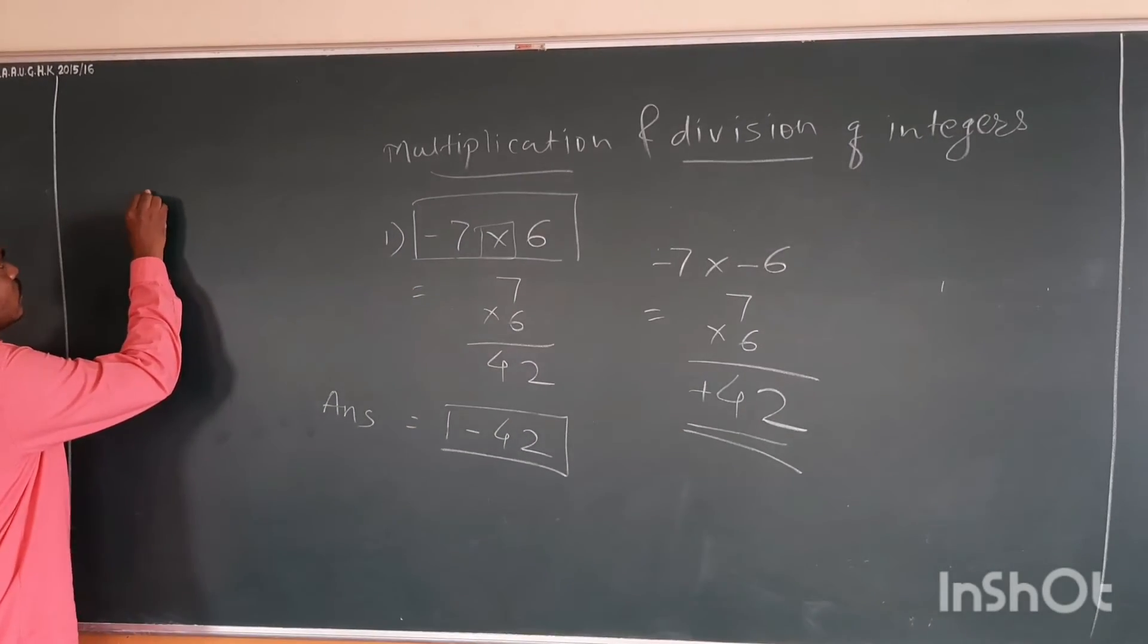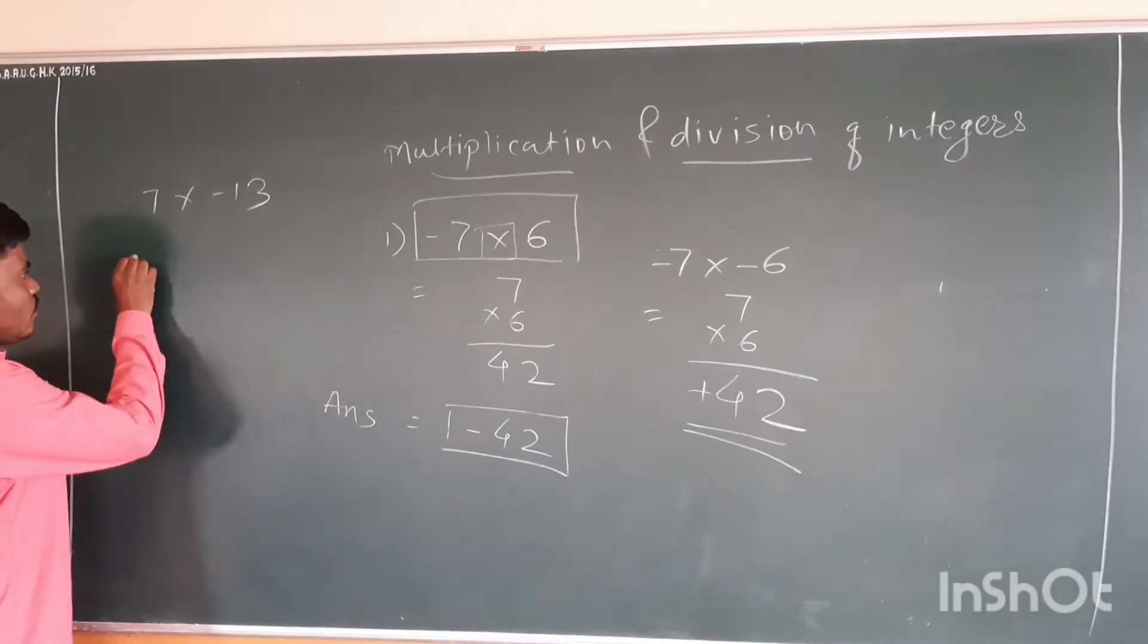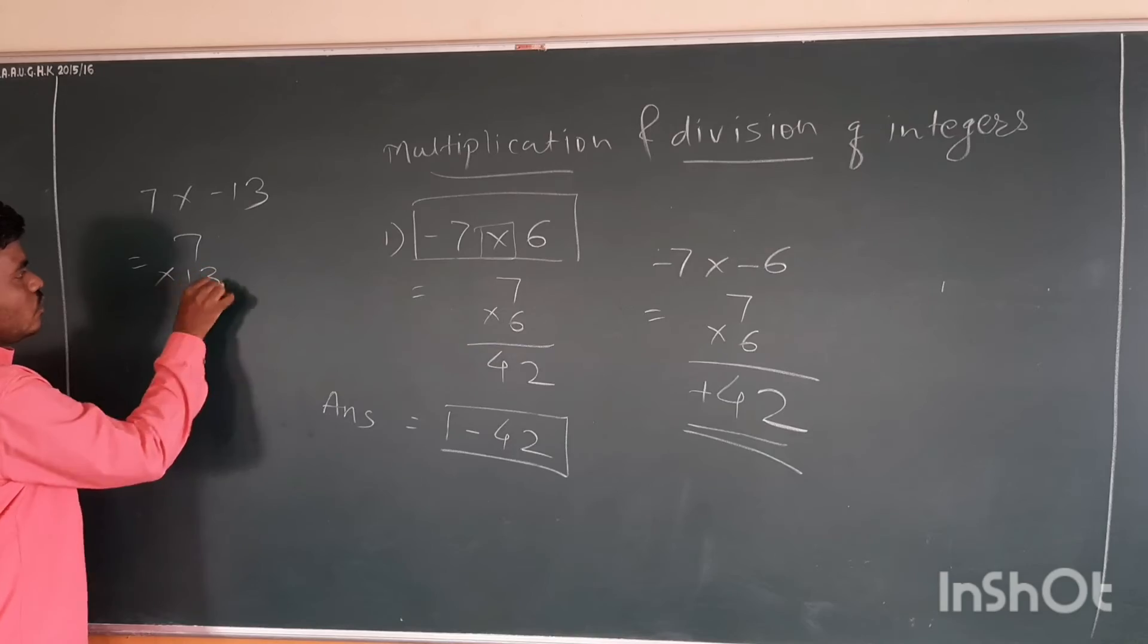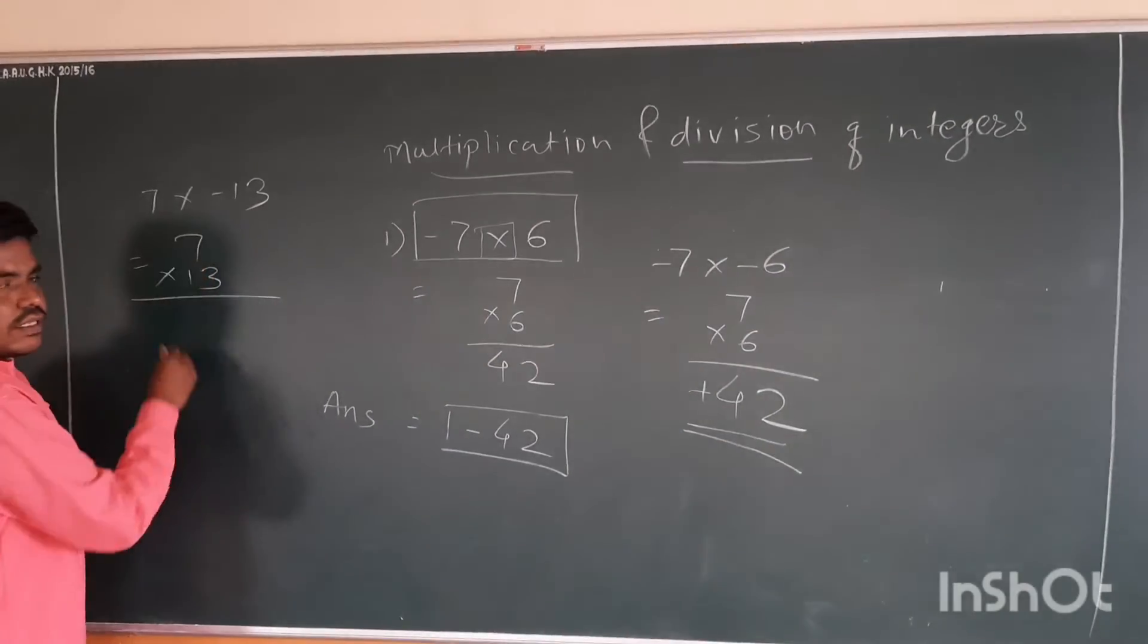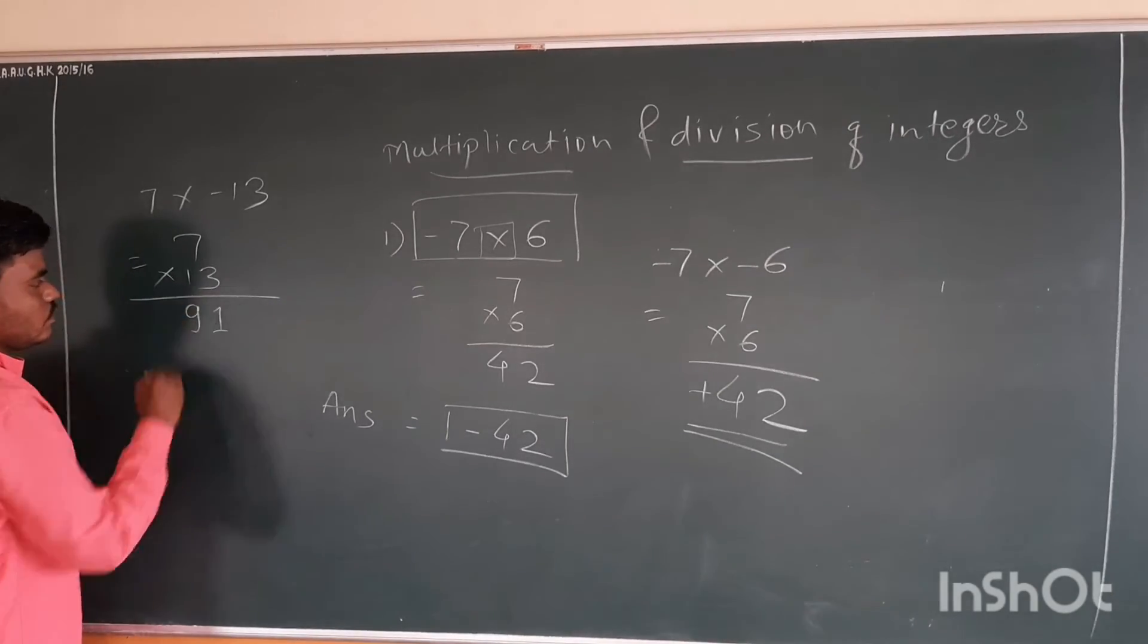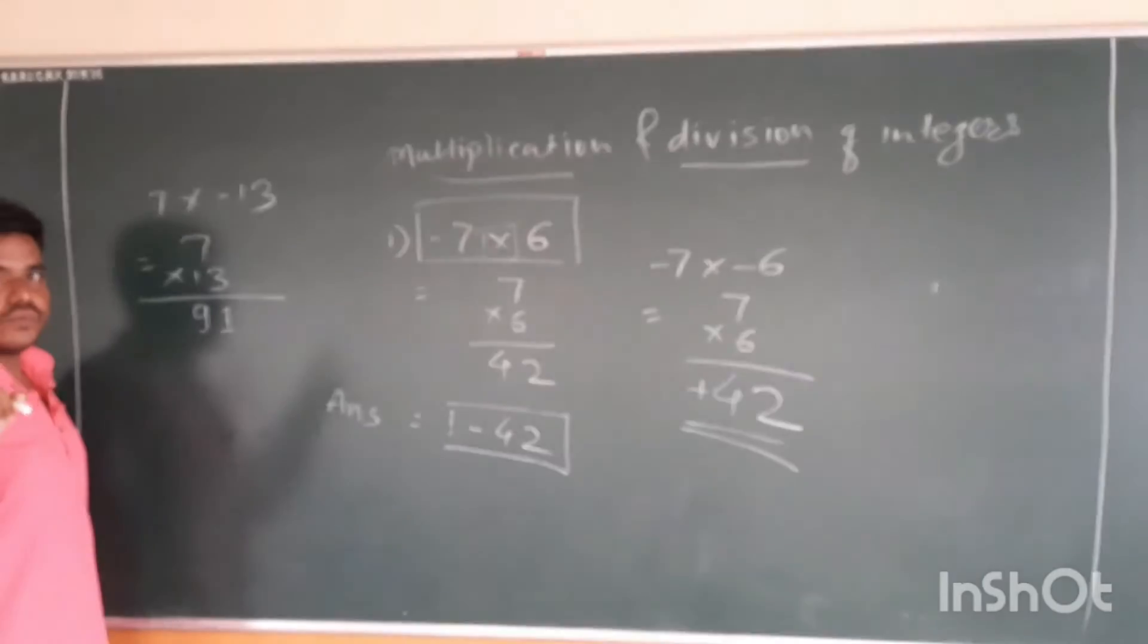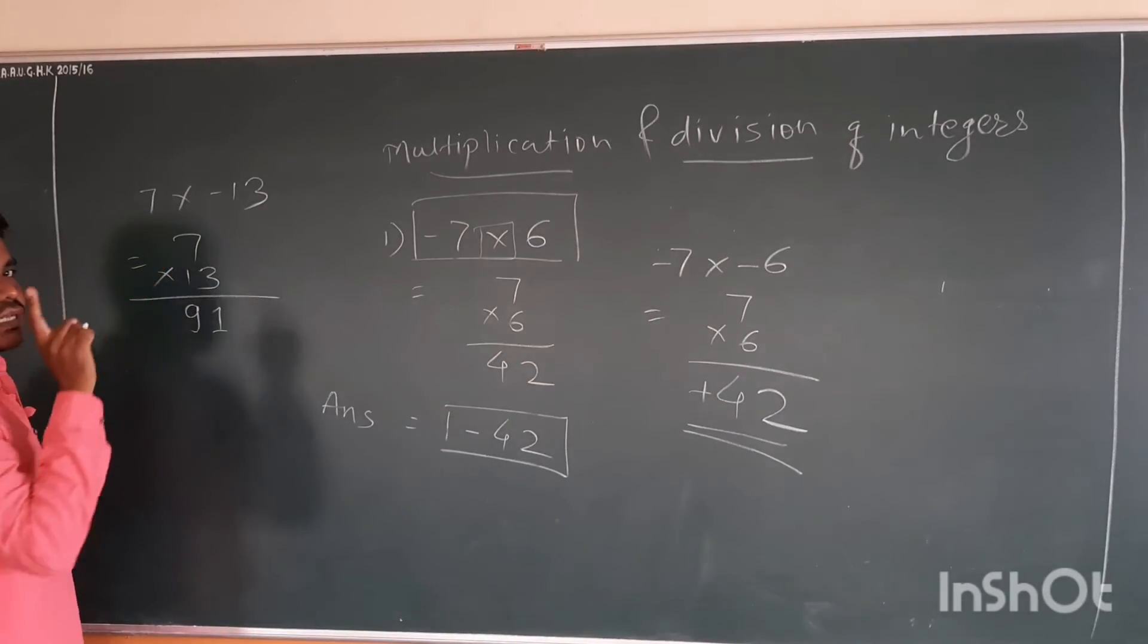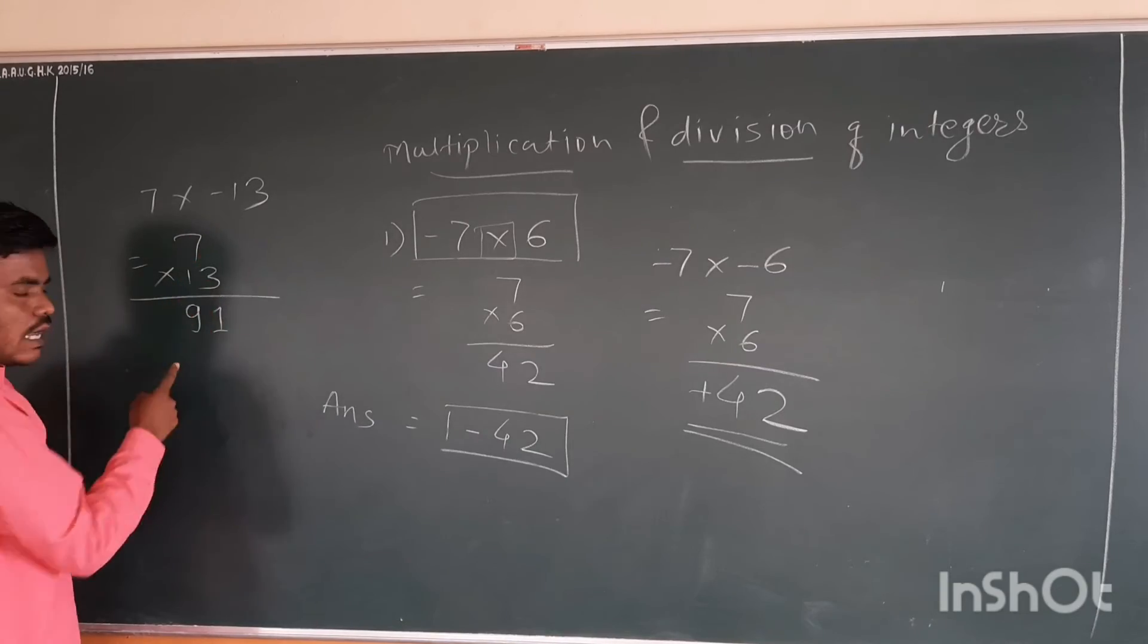7 into... minus 7 into 13. Multiplication. Minus, minus 7 times minus 13.